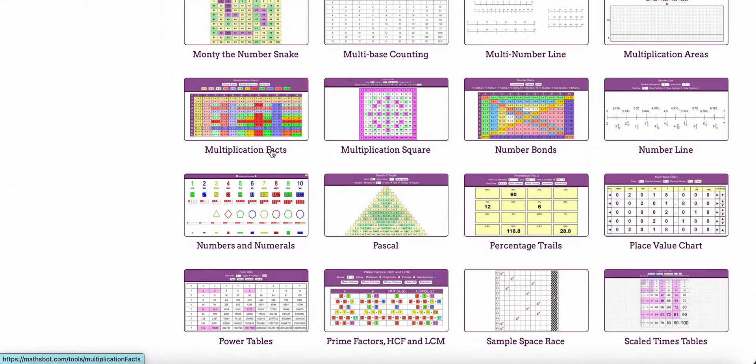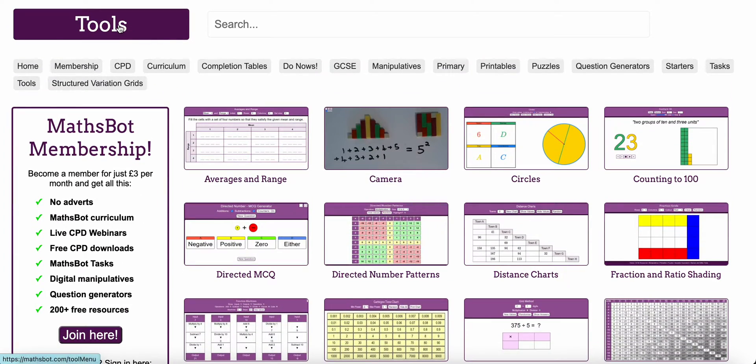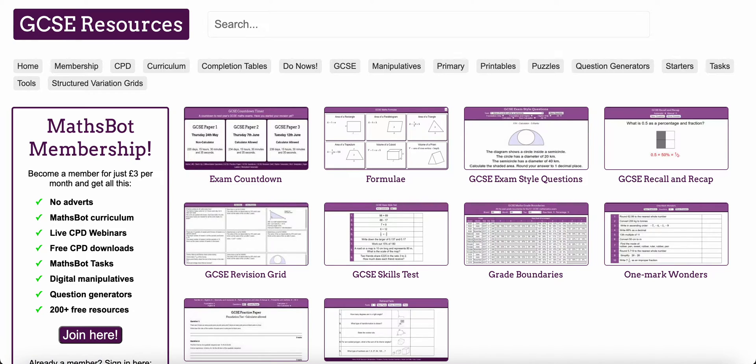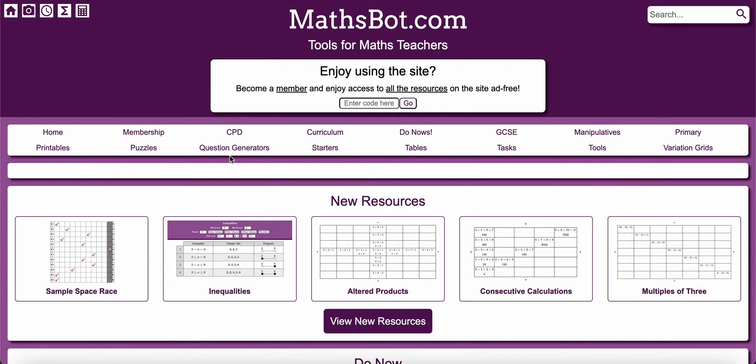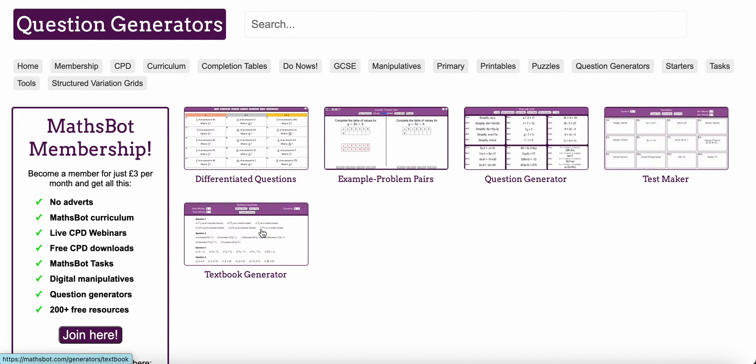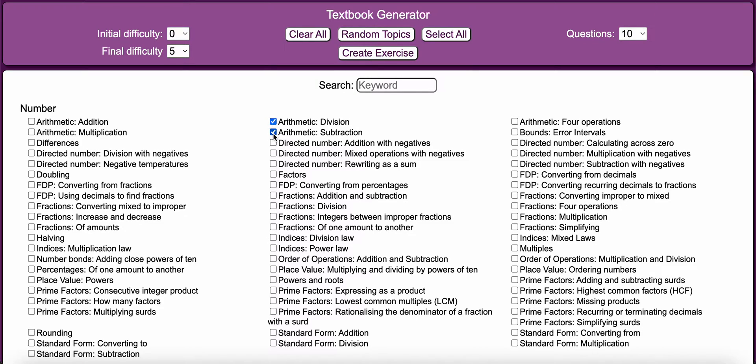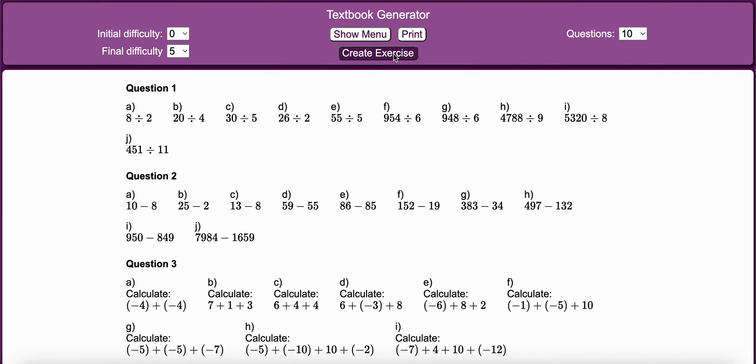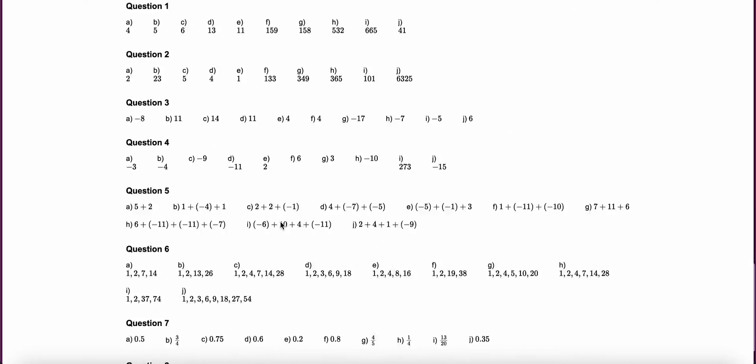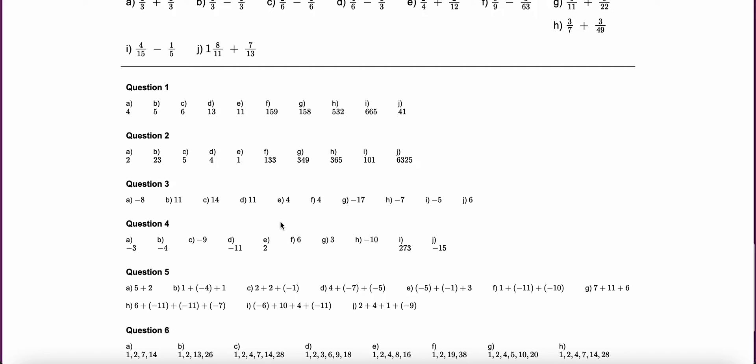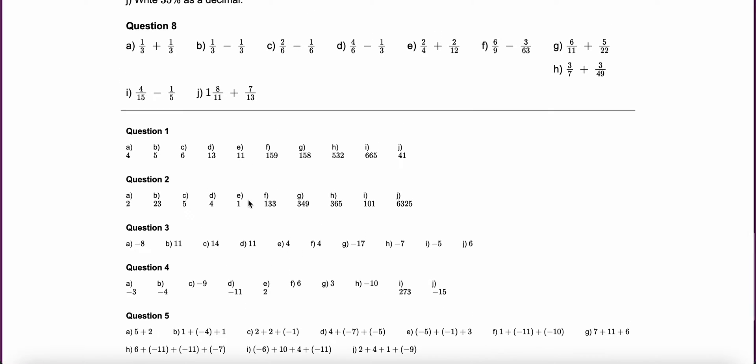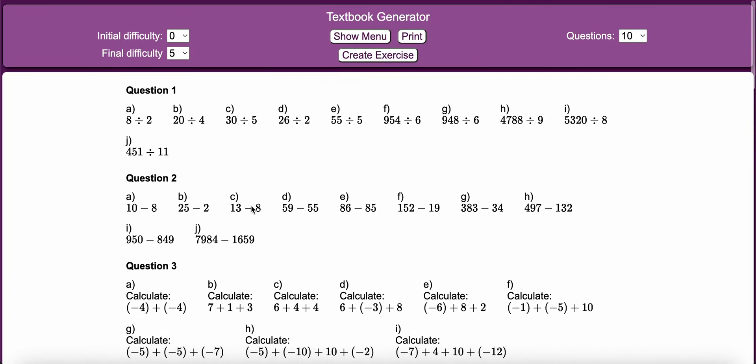It has multiplication facts, it has Pascal triangle. If I go to the homepage, question generators, you can generate your own textbook generators. I've used the textbooks as well. So you can click on whichever topic you are doing. You can create your weekly, fortnightly or monthly or unit booklet. Let's suppose I have those things. Then create exercise based on that. So this has created exercise for that. You can print this as a booklet and then you can just give it to your students. It has answers at the bottom as well.